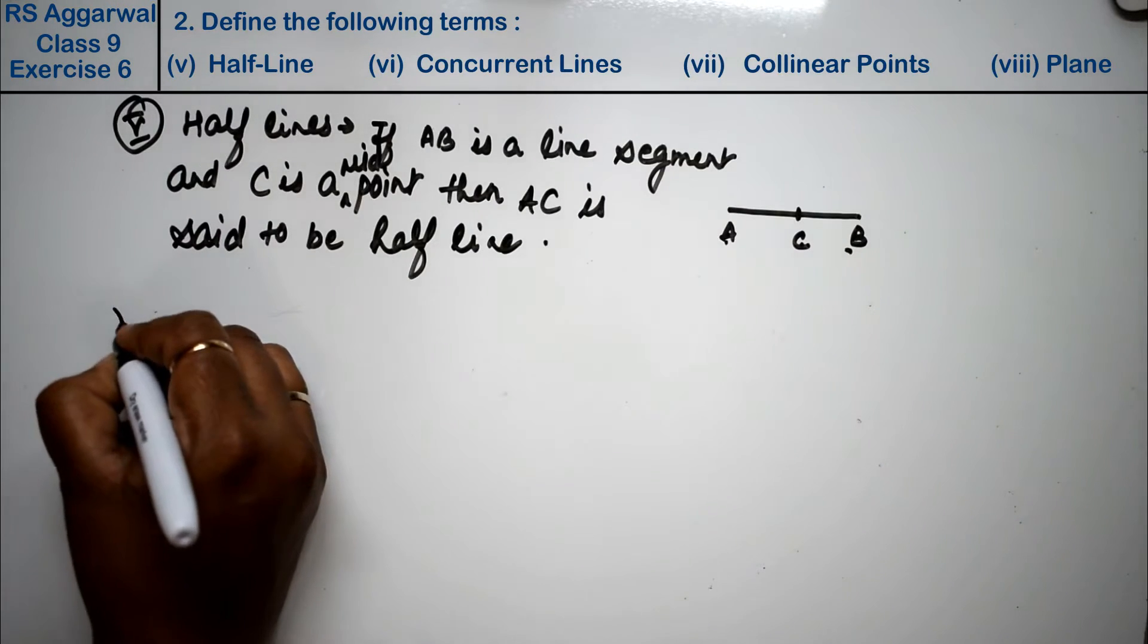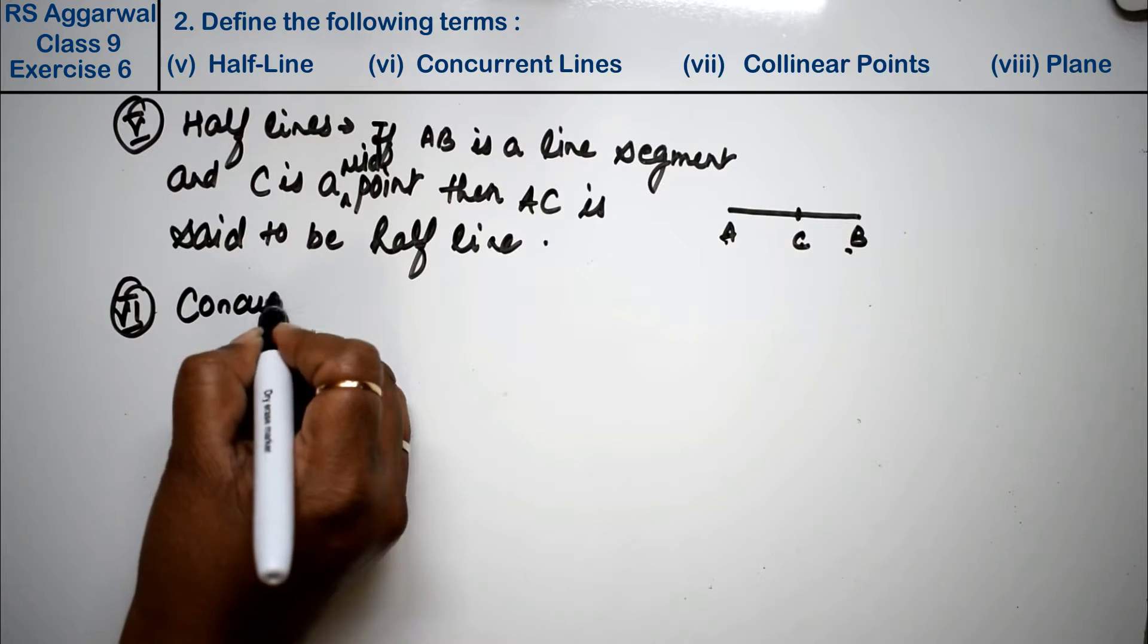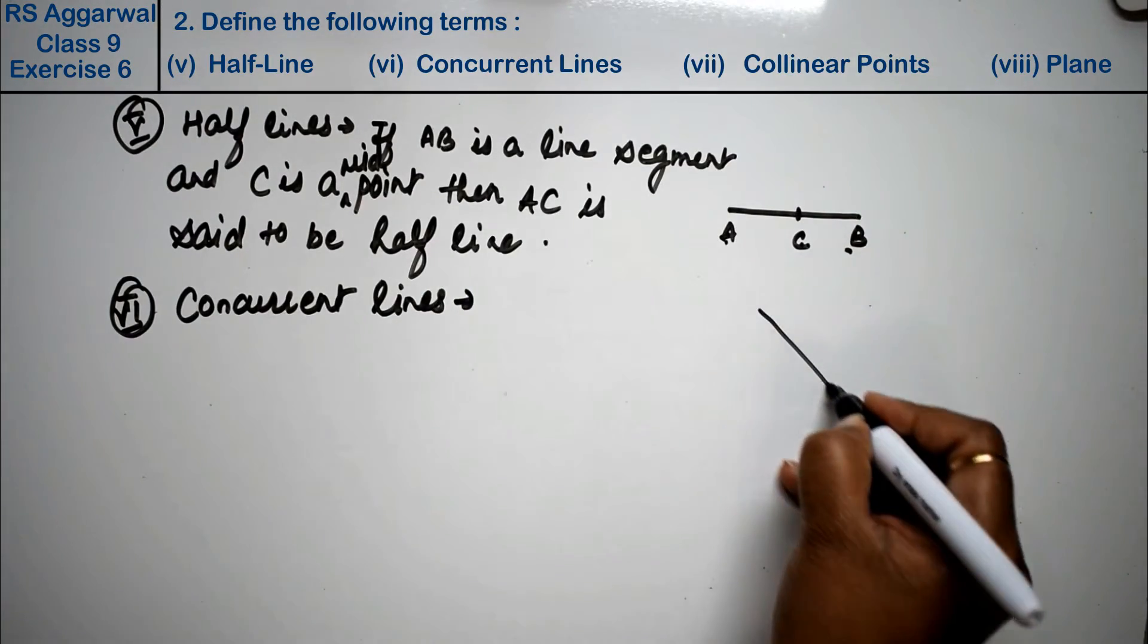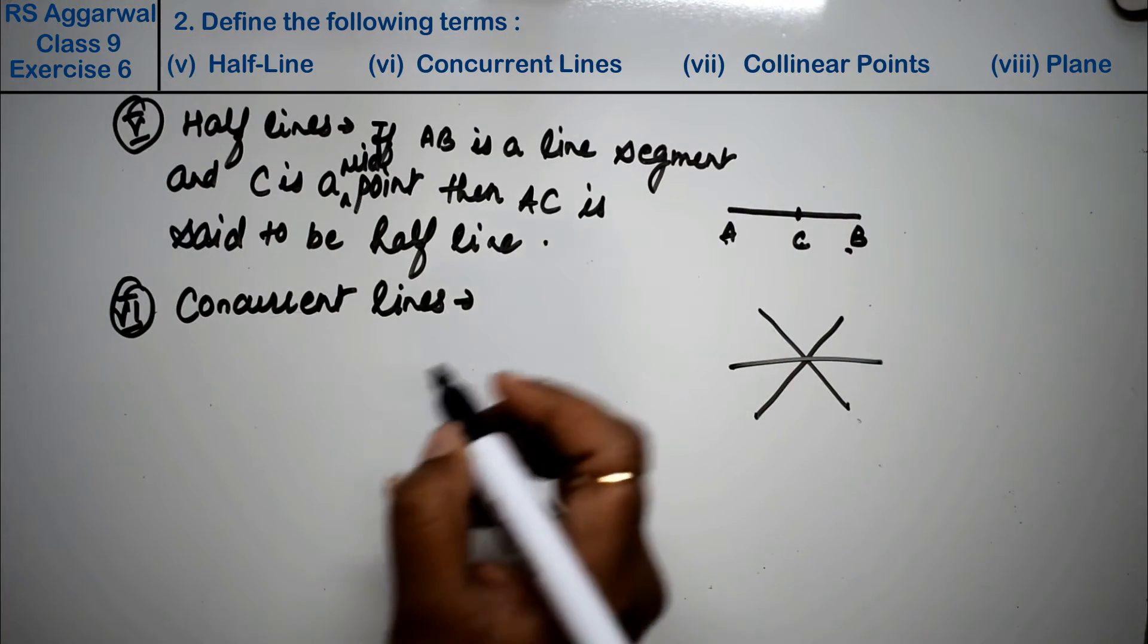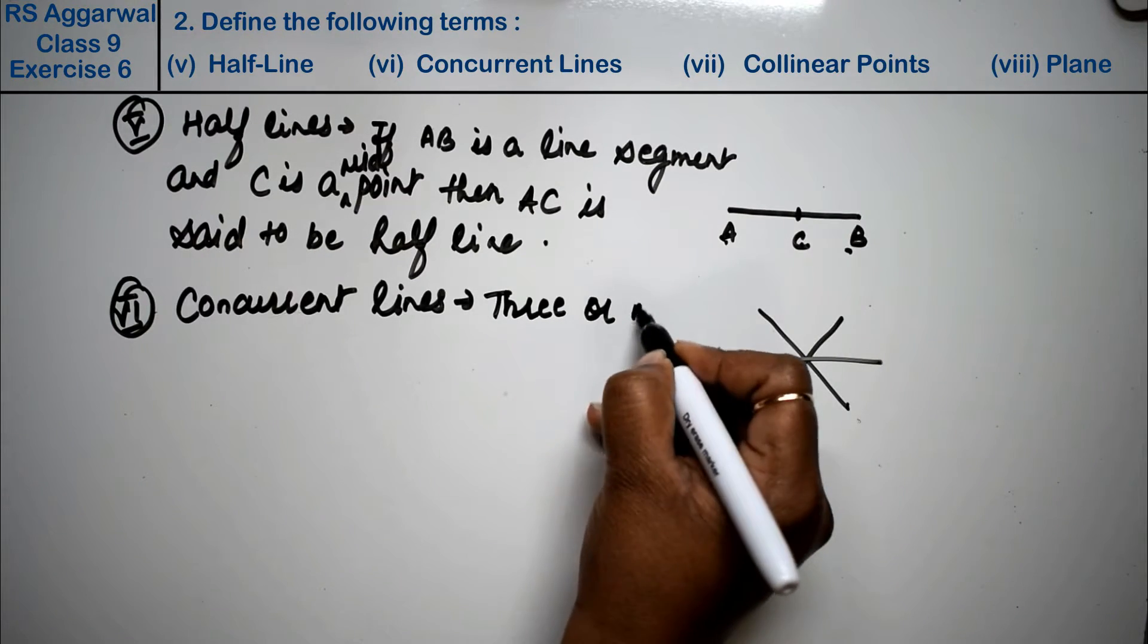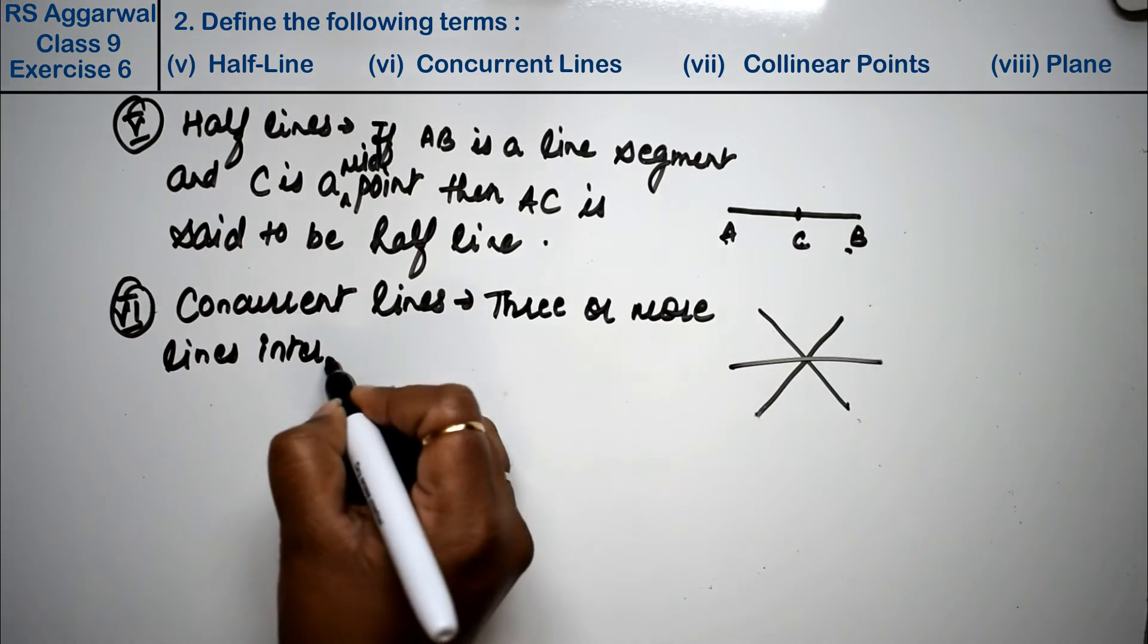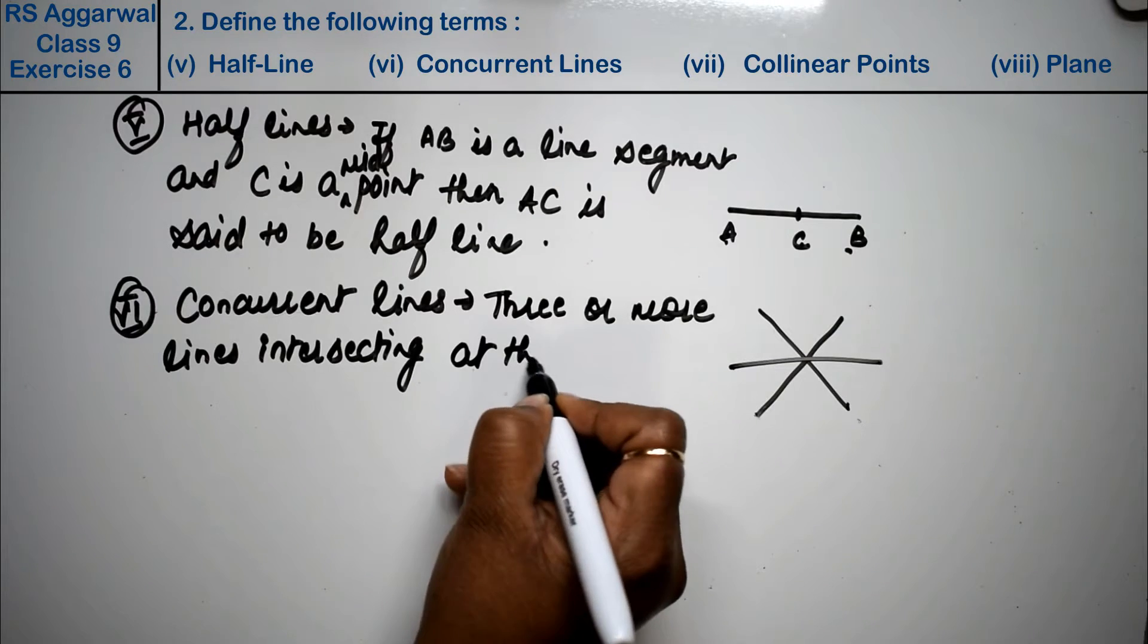Let's do sixth part: concurrent lines. Teen ya teen se zyada lines ek hi point pe intersect kar rahi hain, that is called concurrent lines. Three or more lines intersecting at the common point is called concurrent lines.